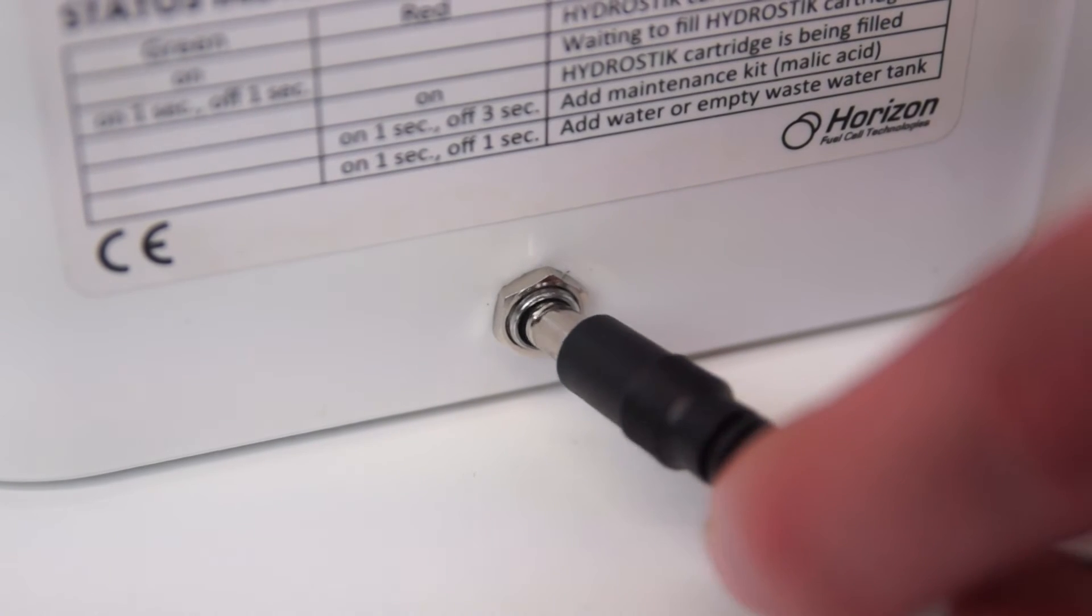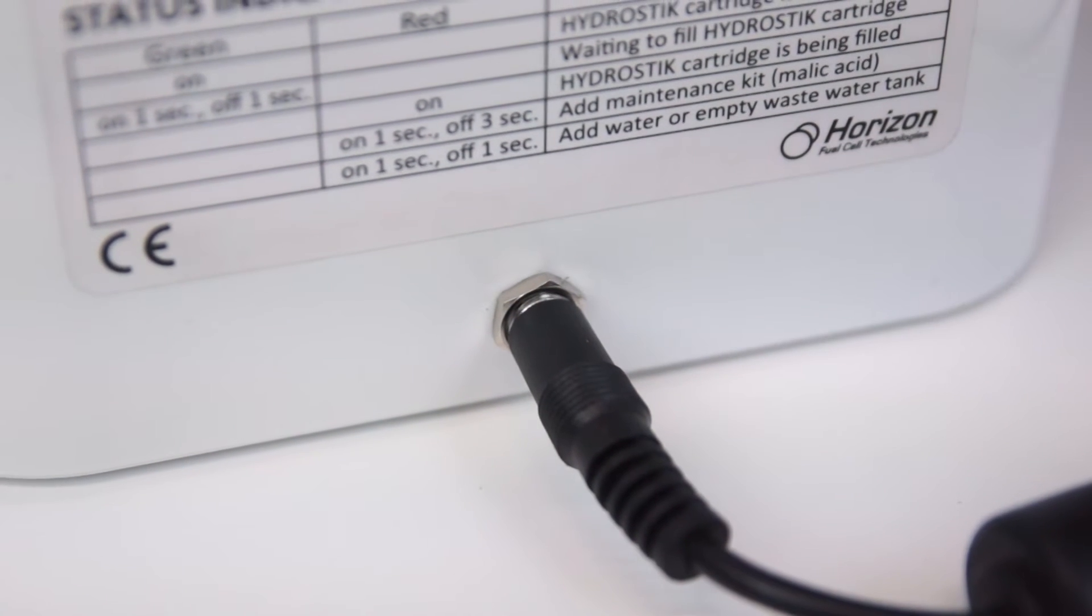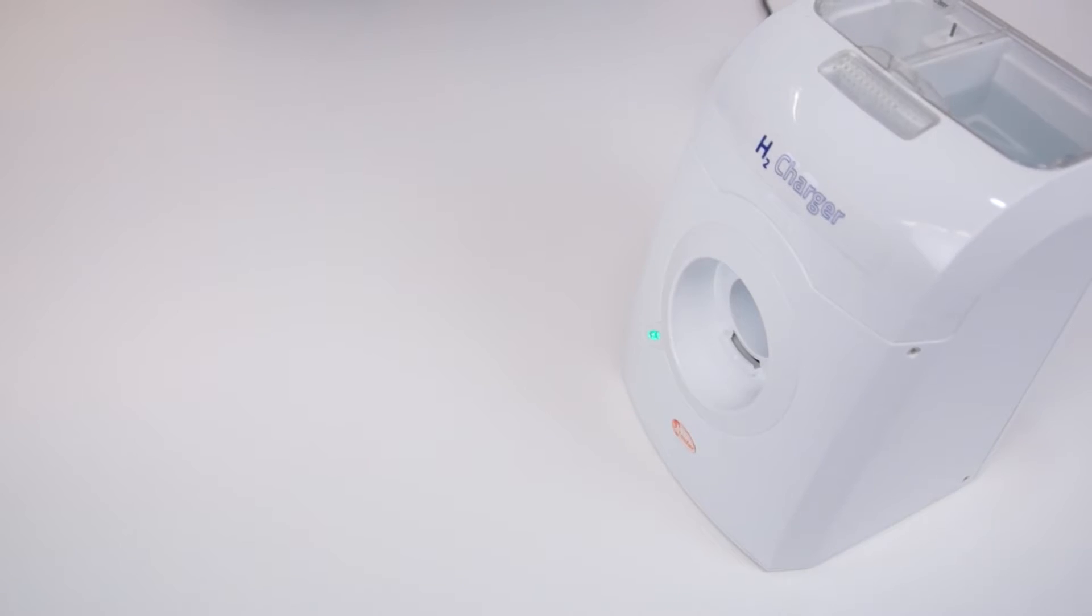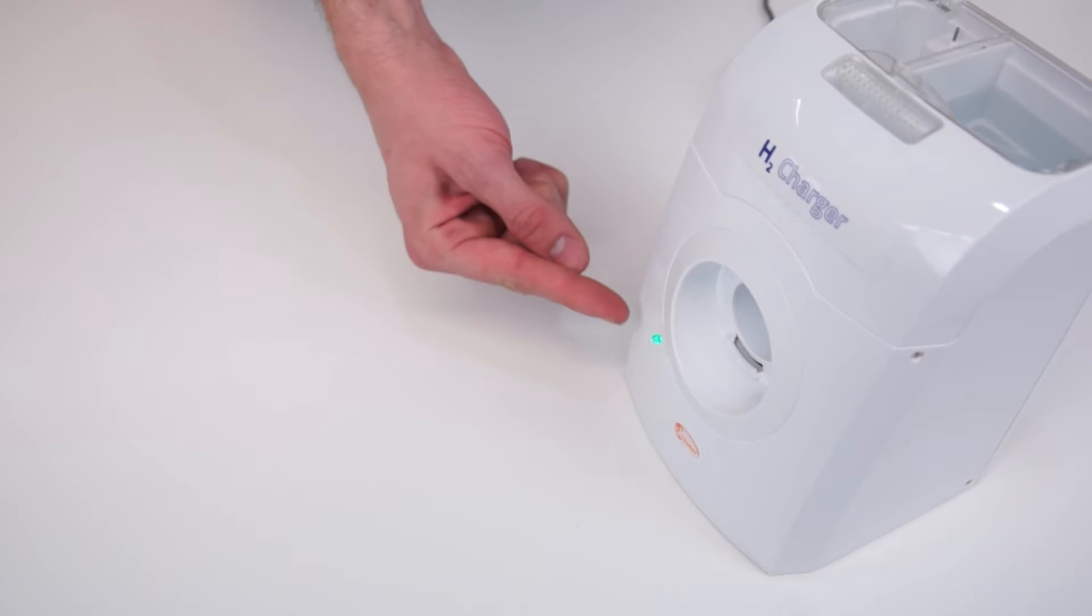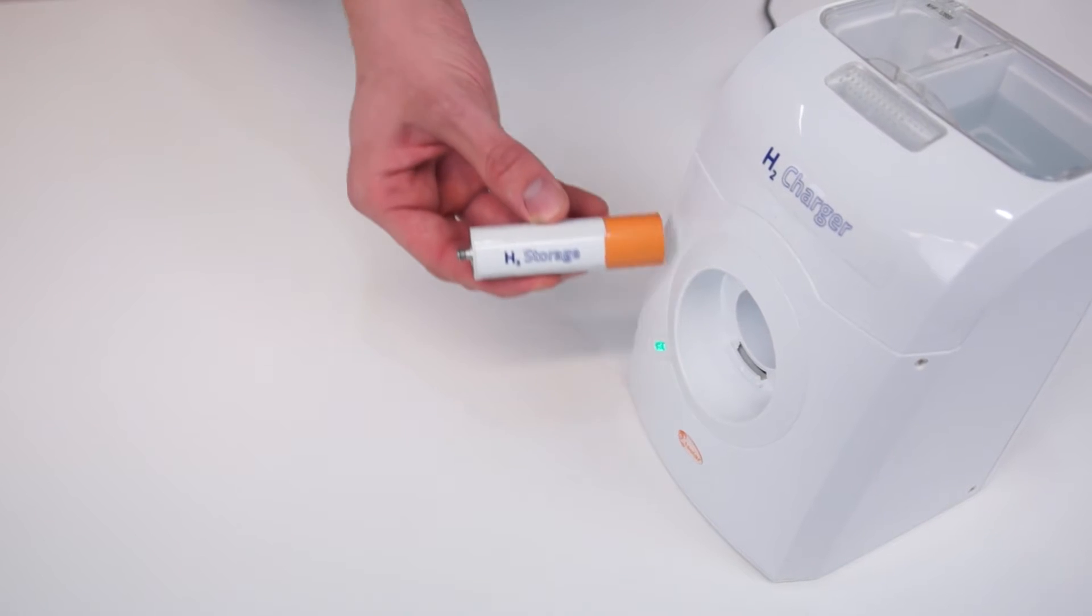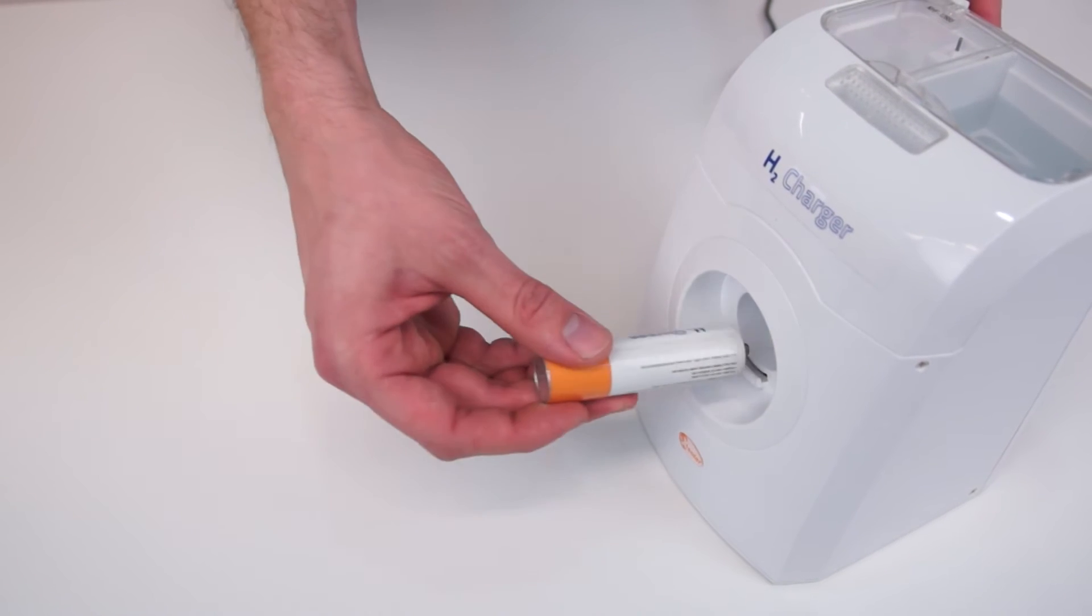Then the power supply is connected to the charger. Now the indicator light should be flashing green. Next we turn the H2 storage in the provided holder until the lamp continuously lights red.